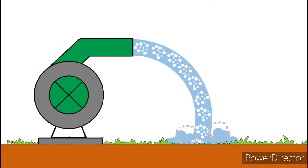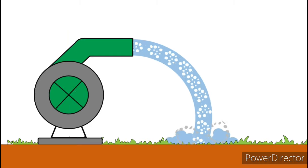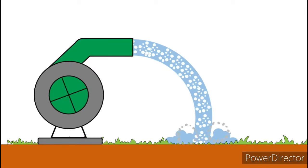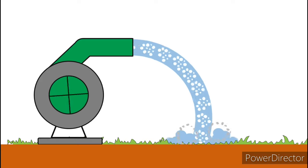Now select this and send to back. Select this one and send to back. Select this circle and send to back. Select this one and also send to back. Now go to Animation Pane, select this and go to Timing, select Repeat Until End of Slide. Go to Slide Show and select From Current Slide. You can see the animation is totally ready. Hope you understand this video — if you did, like it, share it with your friends and please subscribe my channel.